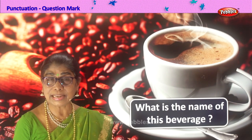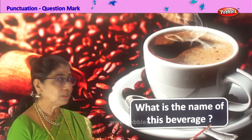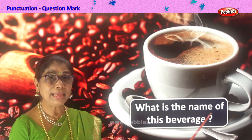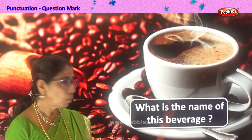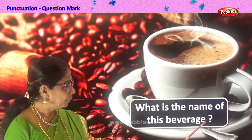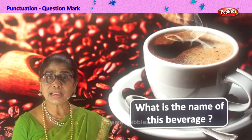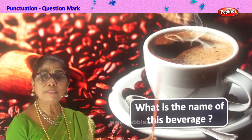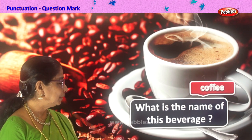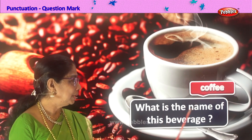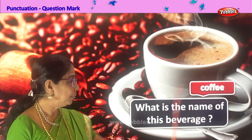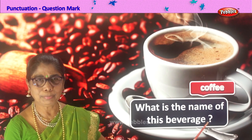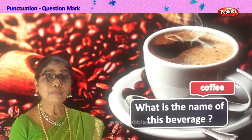Look at the picture. Let's read the sentence — if the sentence is asking a question, we will place a punctuation question mark at the end of the sentence. What is the name of this beverage? The first word 'What' — 'W' — begins with a capital letter. After the word 'beverage,' we put a question mark because it is asking a question. What is the name of this beverage? The name of this beverage is coffee. Look at all the coffee nuts here. What is the name of this beverage? Coffee. 'What' begins with a capital letter, ends with a question mark — punctuation question mark.